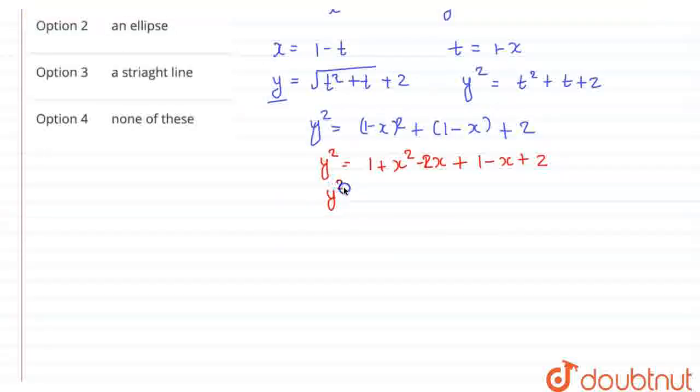So, if I further solve, I can write the equation as x squared minus 2x minus x minus 3x and 2, 3, 4 plus 4. So, I can write y squared as, if I make some adjustment, I can write x squared minus 3x plus 9 by 4, minus 9 by 4 plus 4.